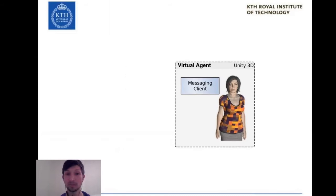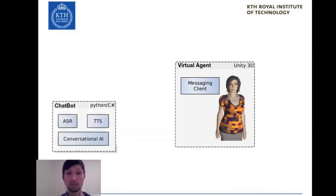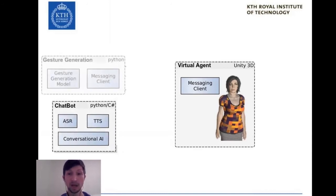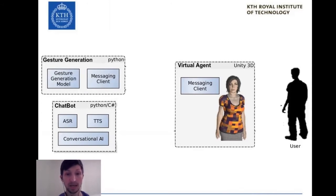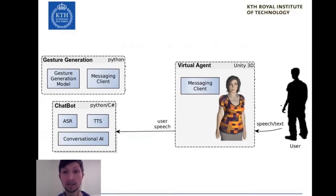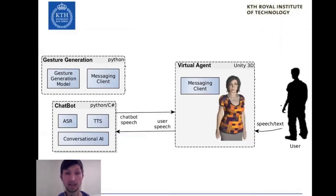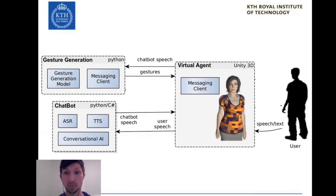The system contains three components: a 3D virtual agent in Unity, a chatbot backend with text-to-speech capabilities, and a gesture generation model that generates gesture motion from speech. The end-user interacts with the conversational agent through a microphone or text prompt. The input message is sent to a chatbot backend that produces the agent's response as text and audio, and the gesture generation model synthesizes the corresponding motion sequence. Communication between components consists of sending the required audio, text, or motion file for each step in the pipeline.